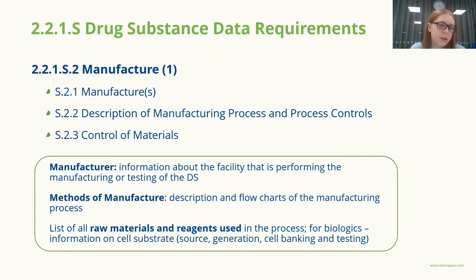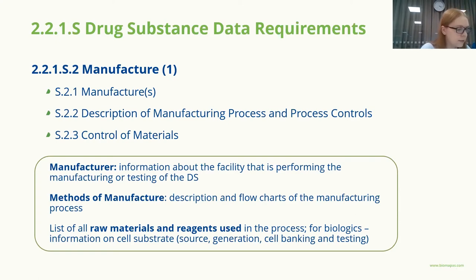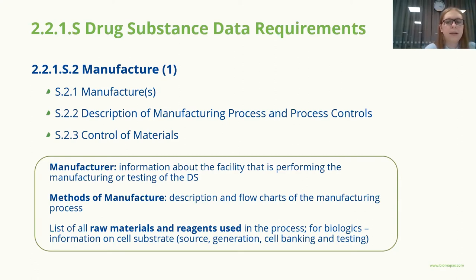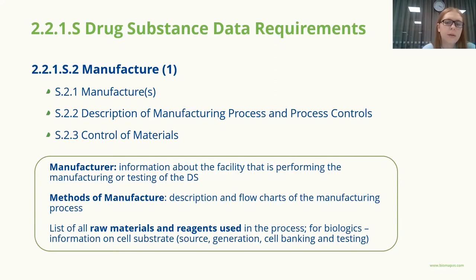The next part should contain a list of all starting materials, raw materials, reagents, solvents, and chromatography resins, with their role in the process described and identified. For biologics, information on the cell line, expression vector, cell banks, cell bank characterization, and testing should be presented.